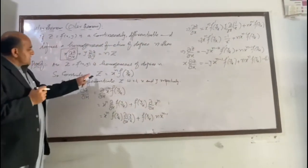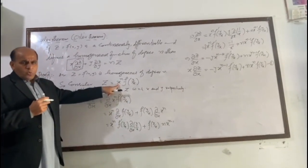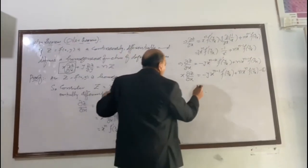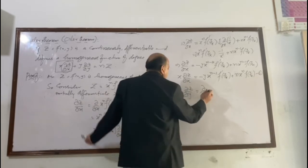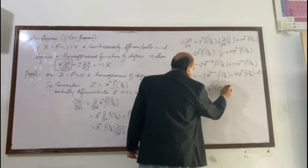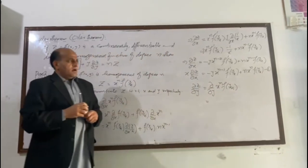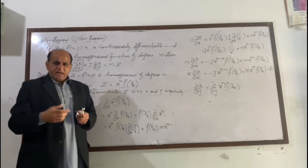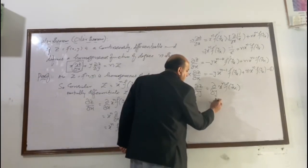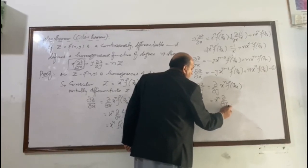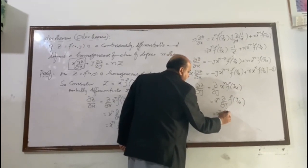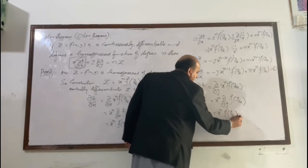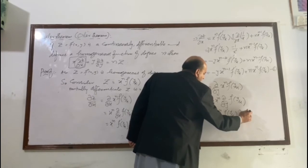Now we are in a position to find ∂z/∂y. Differentiating z = x^n · f(y/x) with respect to y, treating x as a constant factor. So we take x^n out as a constant, and differentiate f(y/x). The derivative of f(y/x) is f′(y/x) into the partial derivative of y/x. Since x is a constant, it is taken out, becoming x^(n−1) · f′(y/x).